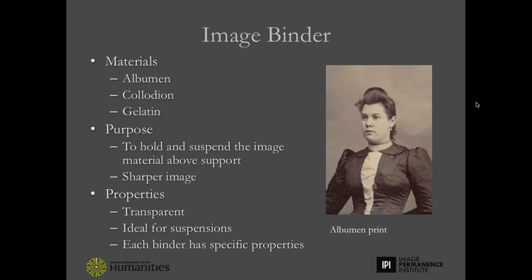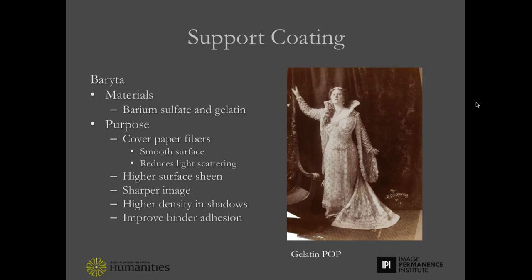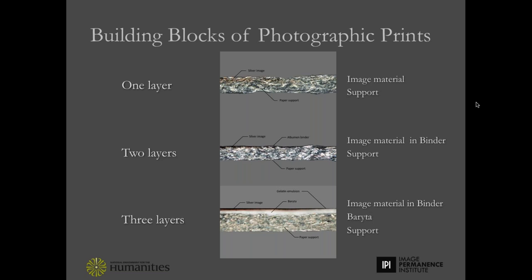Common binder materials are albumin, which is egg whites, collodion, and gelatin. Some photographs have an additional layer called a barita layer. Barita is the pigment barium sulfate — it's a white pigment mixed in with gelatin, which is then coated onto the support to create a really smooth surface. The binder is then coated on top of the barita.